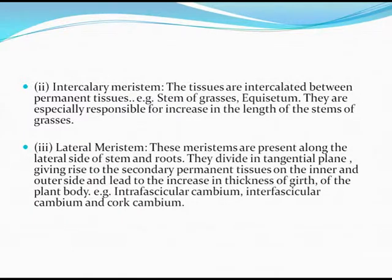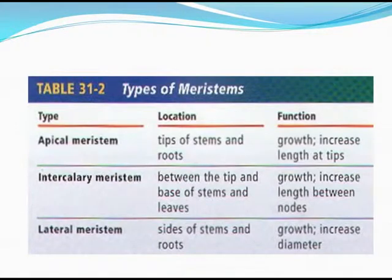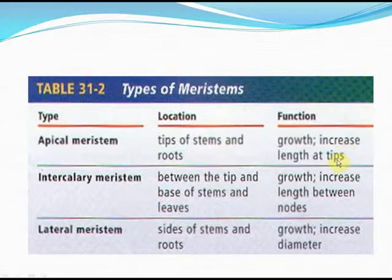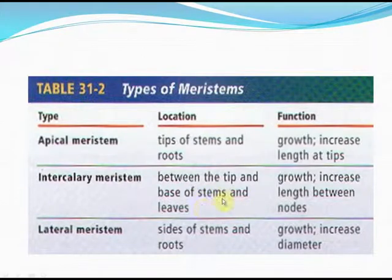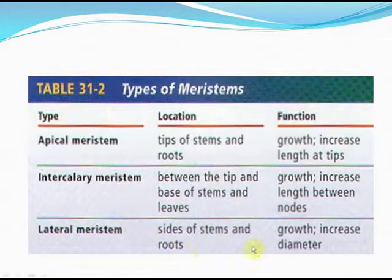Examples of lateral meristems are intrafascicular cambium and cork cambium. The apical meristem is located at the tips of stems and roots and functions in growth and increase in length. Intercalary meristems are between the tip and the base of stems and leaves, enabling growth and increase in length between the nodes. Lateral meristems at the sides of stems and roots help in growth and increase in diameter.